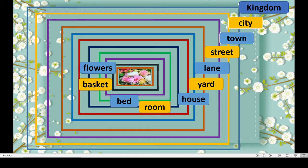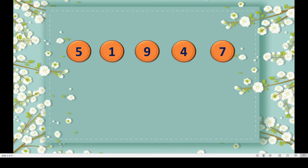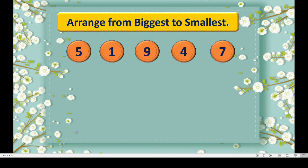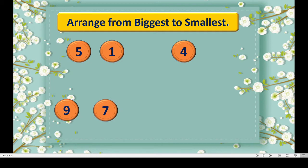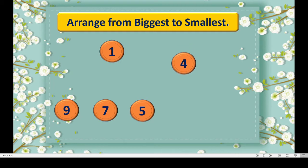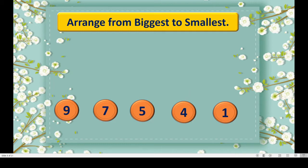Let us move to the next stanza. Dear children, again you can see the numbers. Now we are going to arrange these numbers from biggest to smallest. It is very easy because you know the value of the numbers: 5, 1, 9, 4, 7. Now we will arrange them from biggest to smallest. 9 is the biggest. After 9, a little smaller, that is 7. Then comes 5, then 4. The smallest one is 1. Here we arranged from biggest to smallest. Now we will move to our poem.